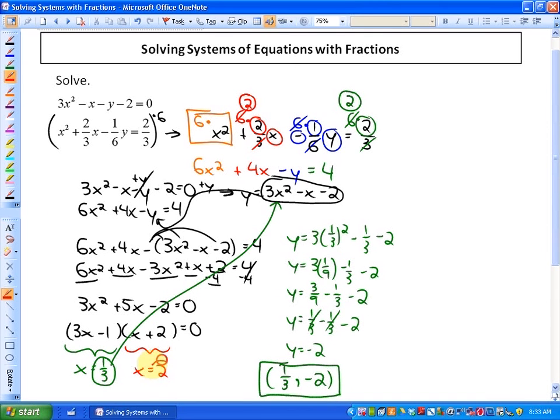The other solution is when I substitute -2 into this function here. I'll get y = 3(-2)² - (-2) - 2. Sorry, I've done a little bit wrong here initially. This solution should actually be -2 because the factor (x + 2) would have a root of -2.